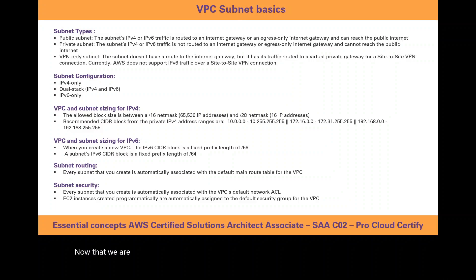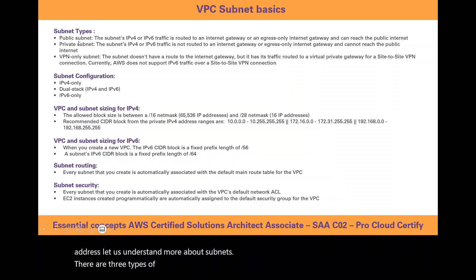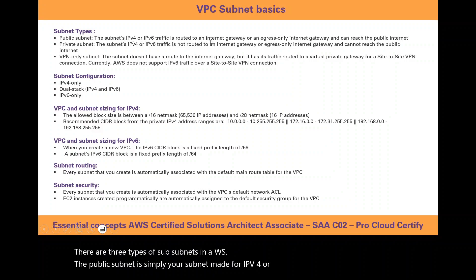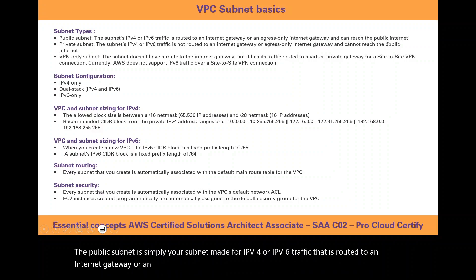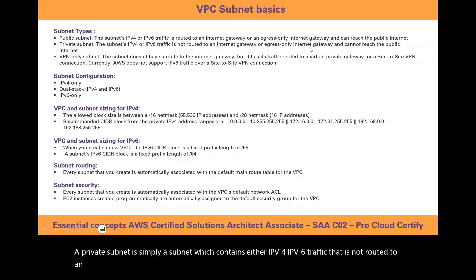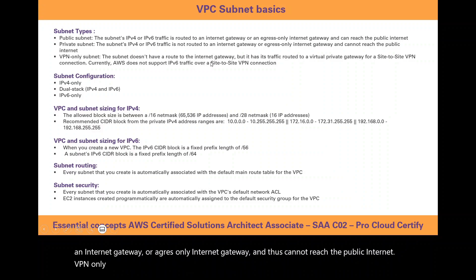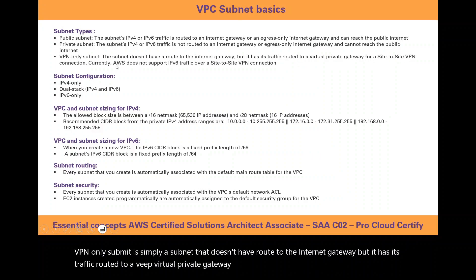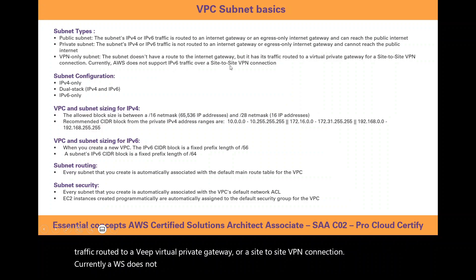Now let us understand more about subnets. There are three types of subnets in AWS. A public subnet contains IPv4 or IPv6 traffic routed to an internet gateway or egress-only internet gateway and can reach the public internet. A private subnet contains IPv4 or IPv6 traffic not routed to an internet gateway and thus cannot reach the public internet. A VPN-only subnet has no route to the internet gateway but has its traffic routed to a virtual private gateway or site-to-site VPN connection. Currently, AWS does not support IPv6 traffic over a site-to-site VPN connection — this is a potential exam question.